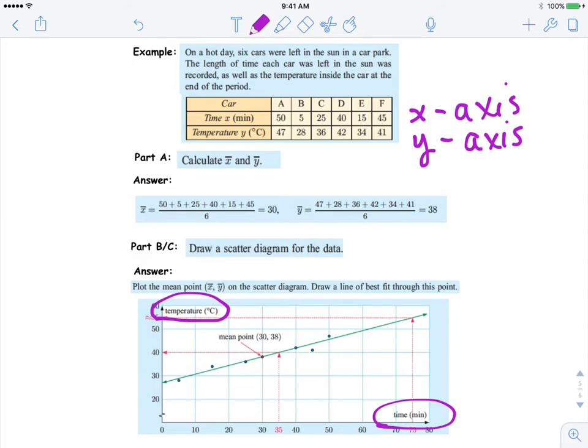So you would graph out these ordered pairs. I'll just show you one of them: over 50, up 47. And then you continue graphing out the rest of those ordered pairs. Now, part A.